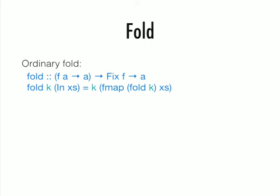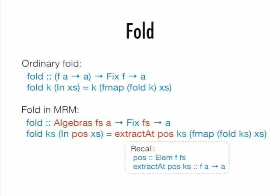This is how typically a fold is defined. Having a data type whose type is Fix F, you unwrap it and recursively apply fold to all the subcomponents before applying this algebra K. This is how we define a fold. Instead of one algebra, we have to take a list of algebras. Similarly, you unwrap the data type, apply fold recursively to all the subcomponents. Here, instead of K, you extract the corresponding F algebra from the list of algebras.